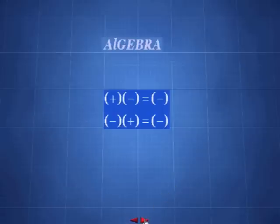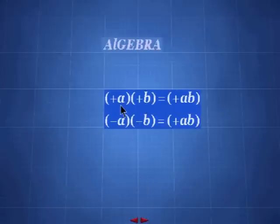Here we have an example: plus a times plus b equals plus ab. It's the same as a times b, shown as ab, because instead of the number that's the result of a times b, we show ab. So plus a times plus b equals plus ab, and also minus a times minus b equals plus ab.